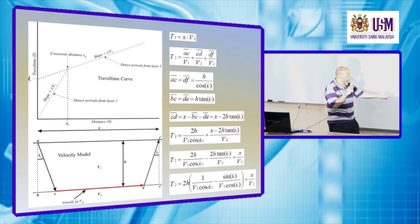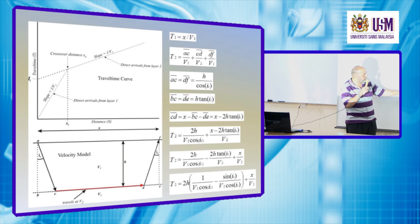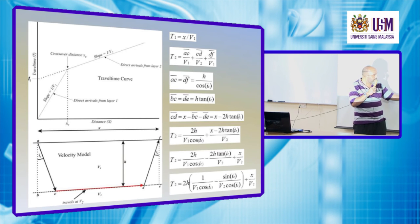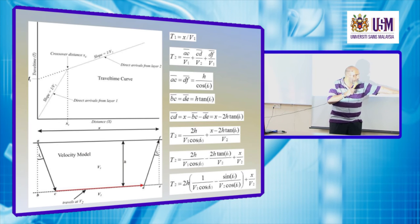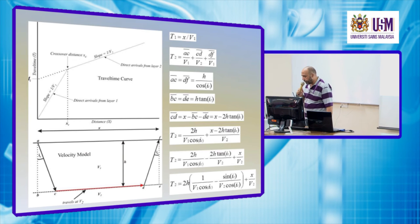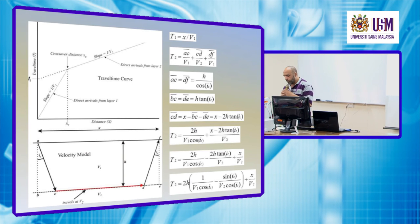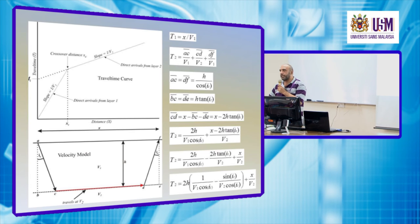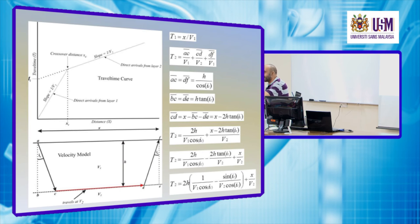Taking 2H as a common factor, we have: T2 = 2H [1/(V1 · cos(IC)) − sin(IC)/(V2 · cos(IC))] + X/V2. Can someone suggest how to get rid of IC — this annoying angle — from this relation?